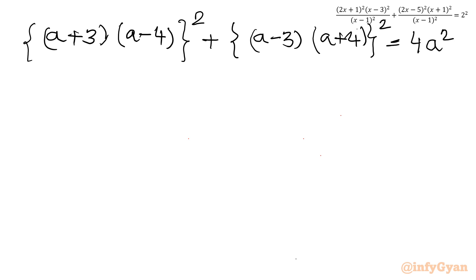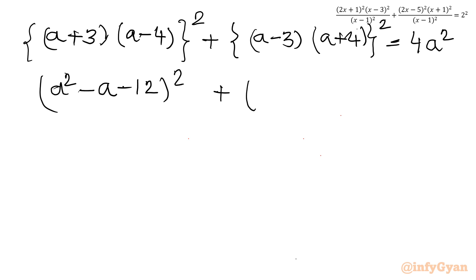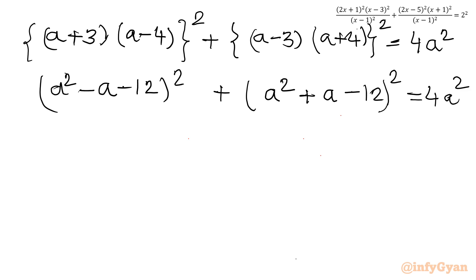Now I will expand by multiplying both brackets. So I write (a²-4a+3a-12)² which is (a²-a-12)², plus (a²+4a-3a-12)² which is (a²+a-12)², equal to 4a².